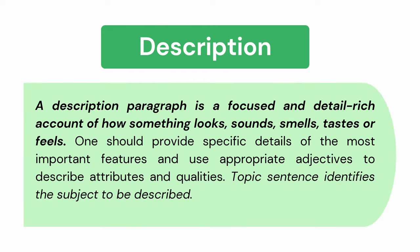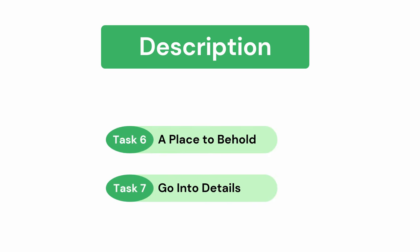Description: A description paragraph is a focused and detail-rich account of how something looks, sounds, smells, tastes, or feels. One should provide specific details of the most important features and use appropriate adjectives to describe attributes and qualities. The topic sentence identifies the subject to be described. You need to answer Task 6, A Place to Behold, and Task 7, Go Into Details.